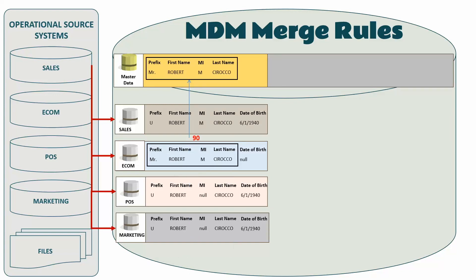Following the matching rules, I apply the merging rule. For first name, last name, and middle name, I treat data coming from e-commerce as the highest priority — scoring it at 90%. That record becomes the candidate for deriving the master data. For date of birth, data from the marketing source system takes a priority ranking of 90%, so it brings the date of birth from marketing, and first name, last name, prefix, and middle name from e-commerce based on my configuration.